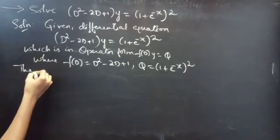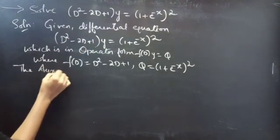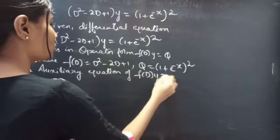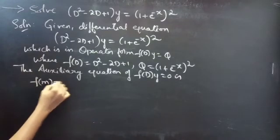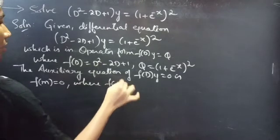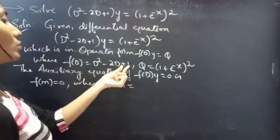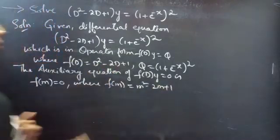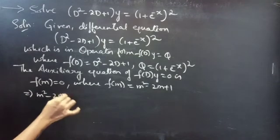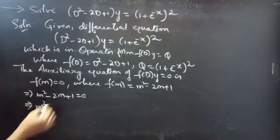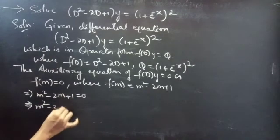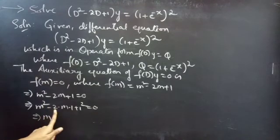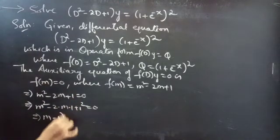Let's find the complementary function using the auxiliary equation of the homogeneous equation. The auxiliary equation of f(D)·y = 0 is f(m) = 0. Since f(D) = D² - 2D + 1, replacing the differential operator by m gives f(m) = m² - 2m + 1. The auxiliary equation becomes m² - 2m + 1 = 0, which can be written as m² - 2(m)(1) + 1², which is in the form (a - b)² = a² - 2ab + b².